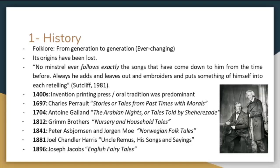Then in 1812, the famous Grimm Brothers released Nursery and Household Tales, which include stories related to Hansel and Gretel, Rumpelstiltskin, and Snow White — those are some of the classics. Then in 1841, Peter Asbjørnsen and Jørgen Moe created Norwegian folktales dedicated to Norway. Then in 1881, Joel Chandler Harris released Uncle Remus: His Songs and Sayings, which were folktales related to the United States and the Black community. Then in 1896, Joseph Jacobs created English Fairy Tales, dedicated to The Three Little Pigs, Henny Penny, and Jack and the Beanstalk.